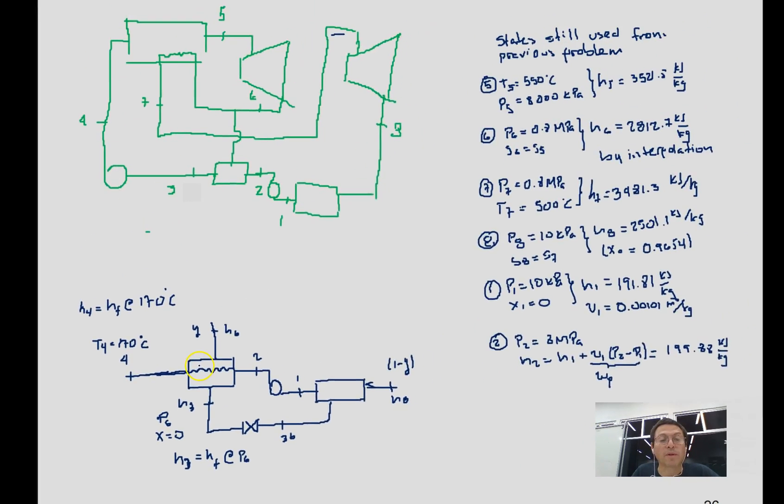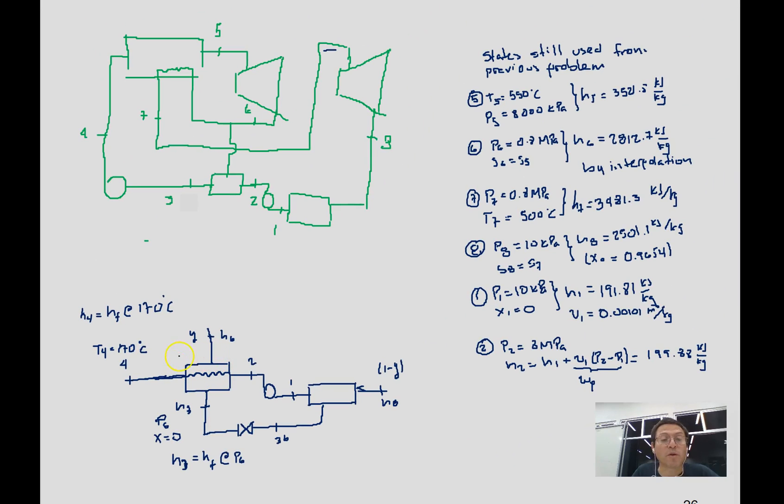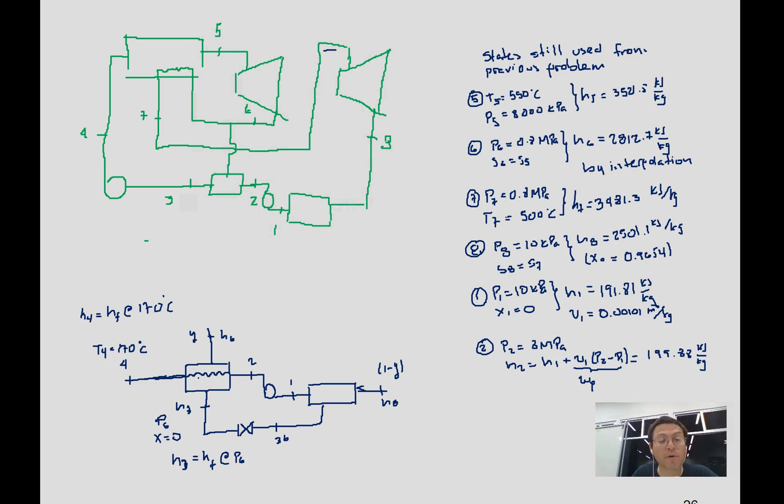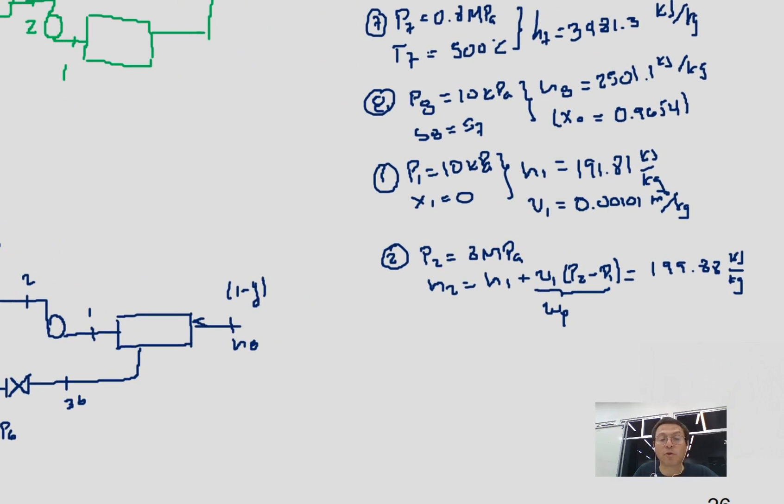So now everything that's left is just to perform our first law analysis. This is, as we mentioned in the theory, a closed feedwater heater, so no Q in or Q out because we don't want heat coming from the environment or going to the surroundings. It's a rigid heat exchanger, so we don't have work.